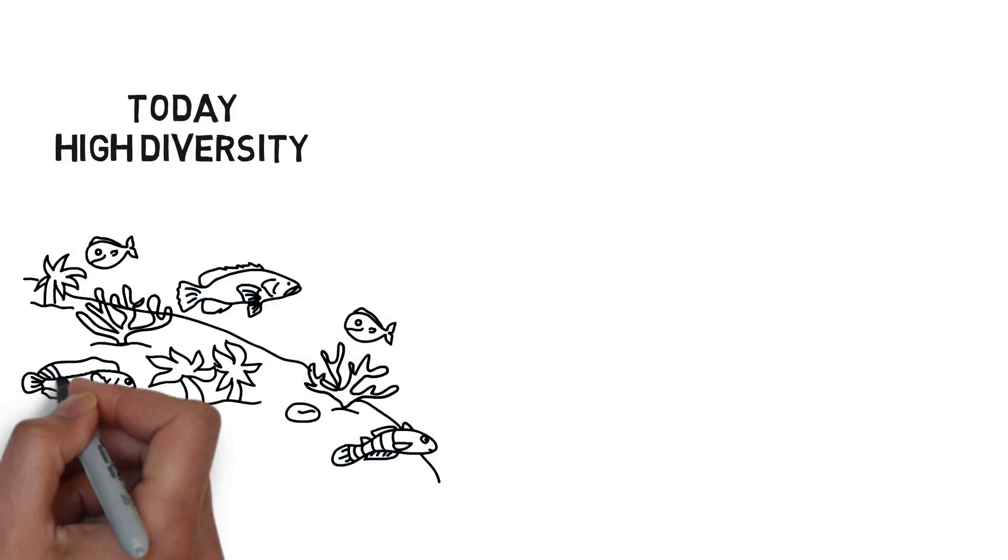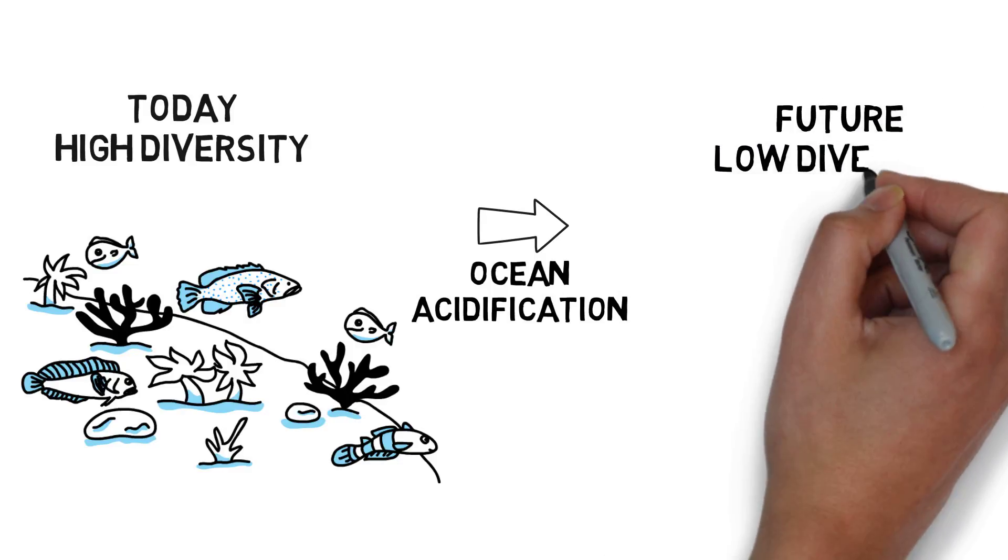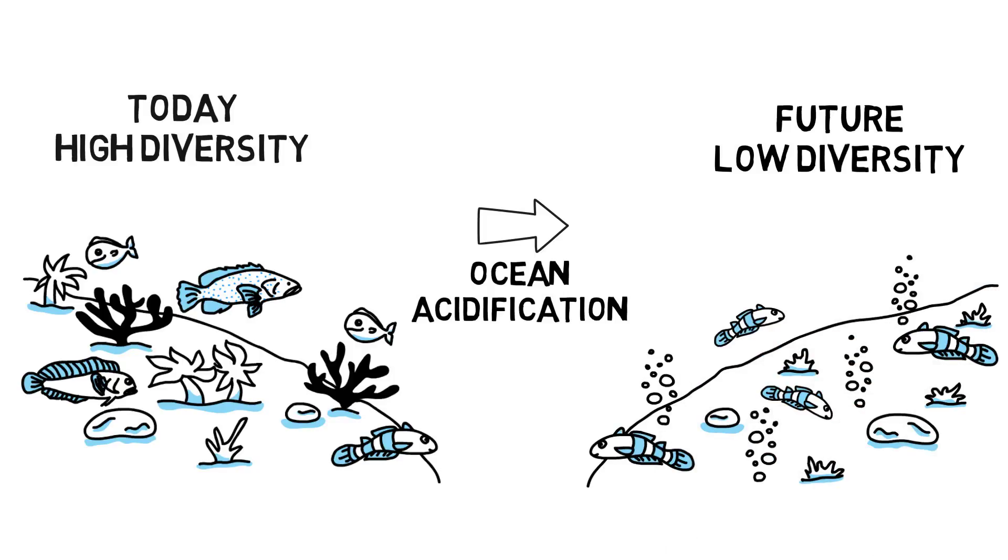Future levels of CO2 made the strongest species of fish proliferate at the expense of many other less common species. This meant that ocean acidification profoundly changed the whole ecosystem and decreased its diversity.